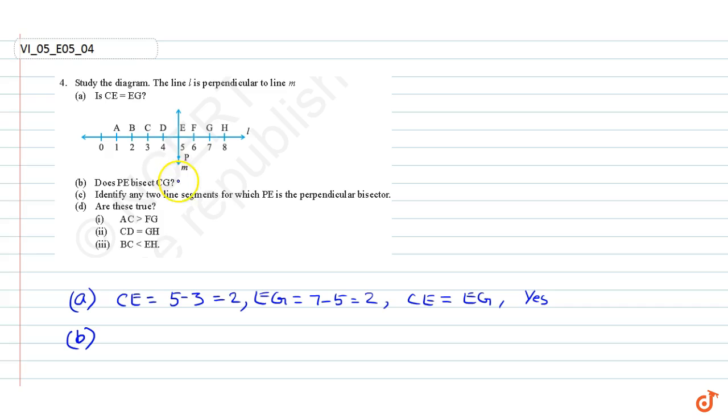Part b: Does PE bisect CG? We know that CE = 2 and EG = 2 from part a. Therefore CE = EG, so we can say that PE bisects CG. The answer is yes.